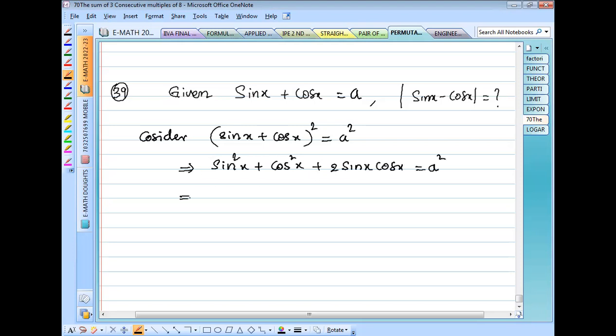We know that sin²x + cos²x is 1, plus 2sinxcosx, which equals a². And from this we can have that 2sinxcosx is equal to a² - 1. So say this is equation number 1 because we are going to use this result somewhere for finding this value.